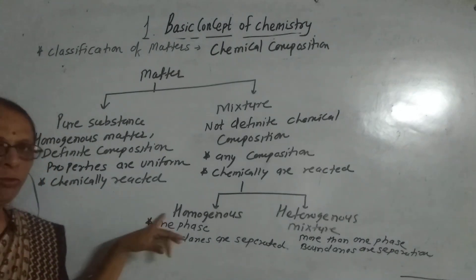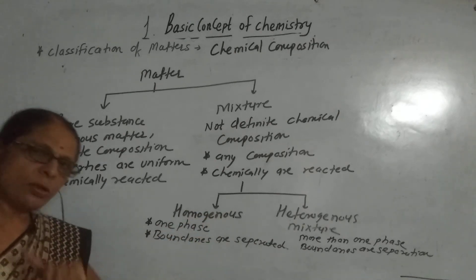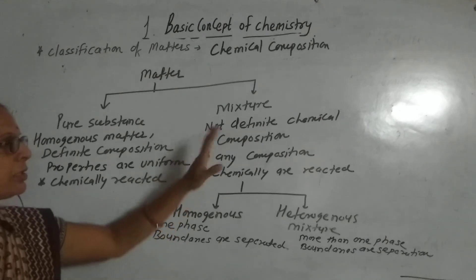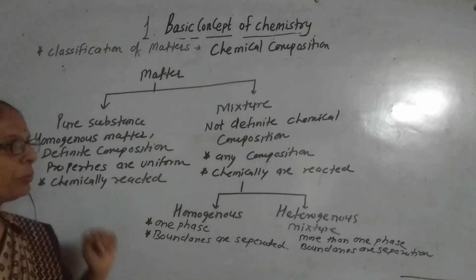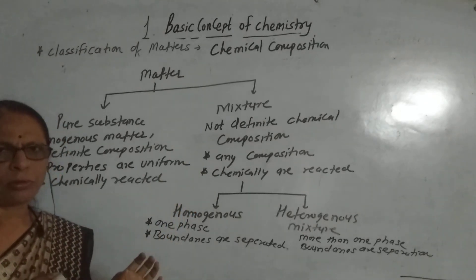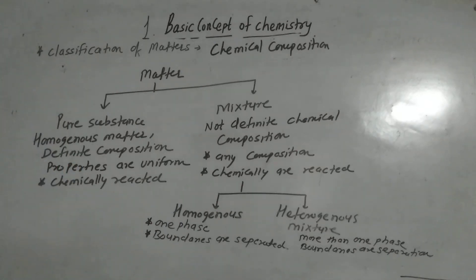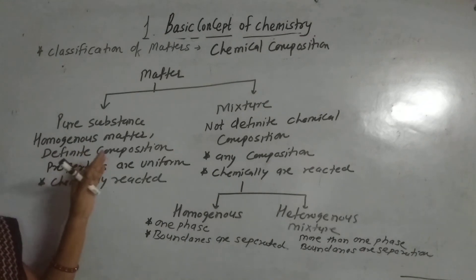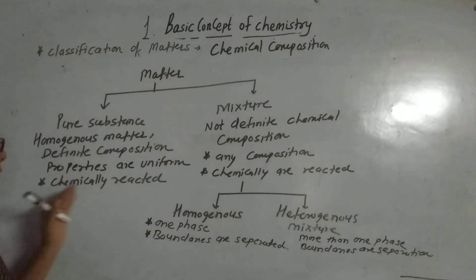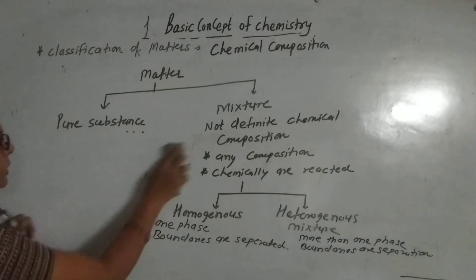In heterogeneous mixtures, they have more than one phase and boundaries are separated. In homogeneous mixtures, they are in only one phase and boundaries are not separated. Mixtures do not have definite chemical composition, are not chemically reacted, and can combine in any proportion. Pure substances are homogeneous, have definite chemical composition, and combine in definite ratios, so they are chemically reacted.